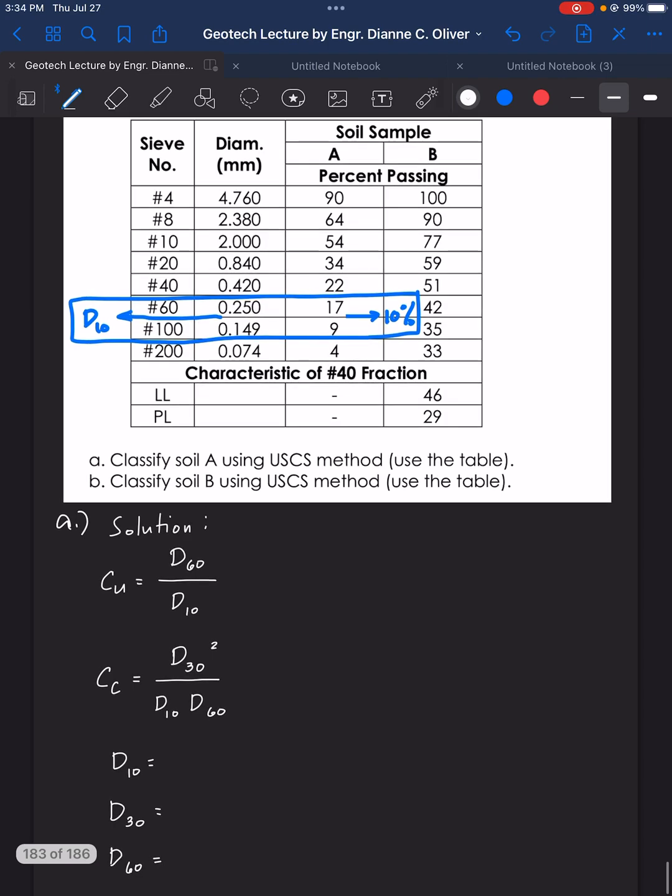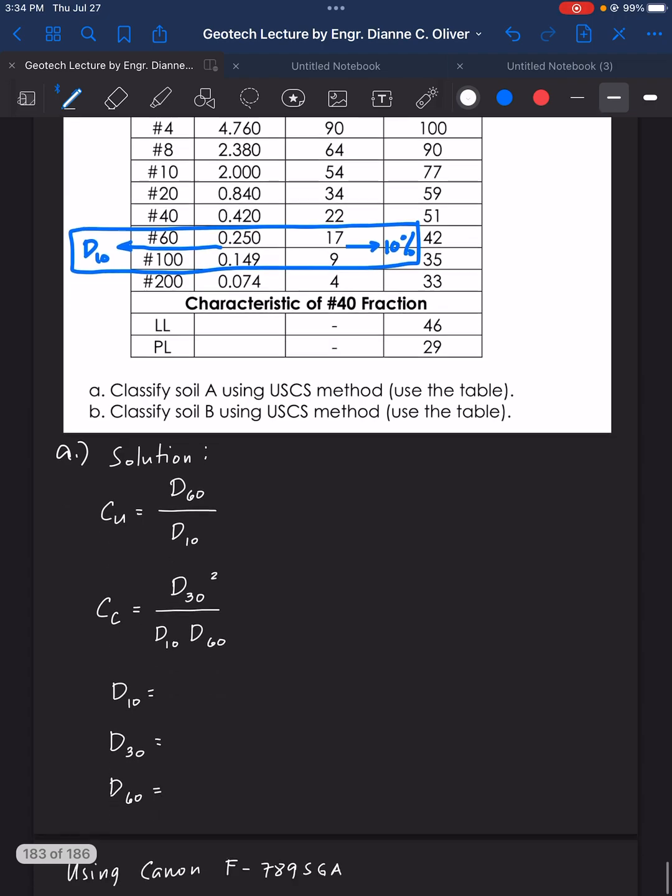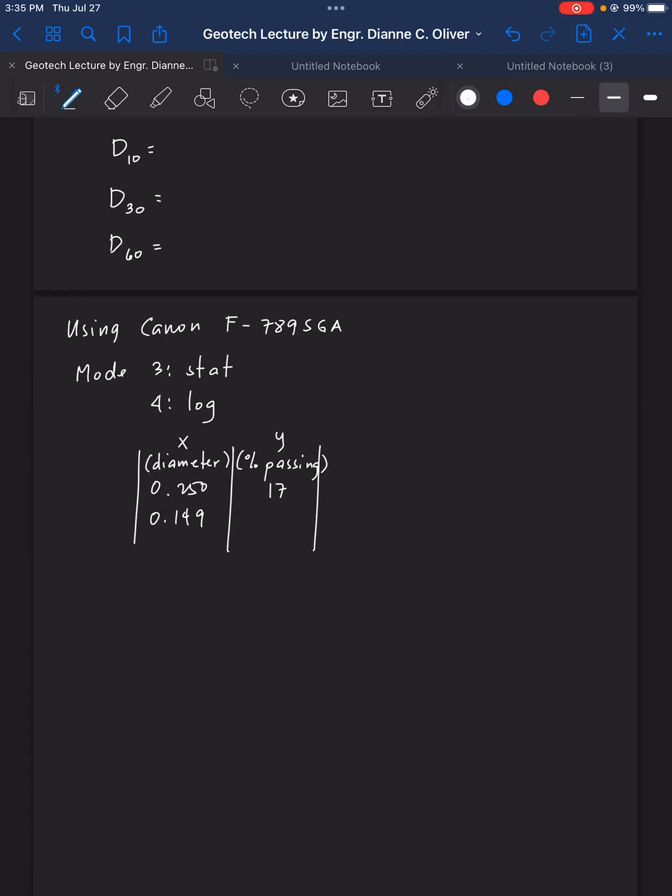Looking here, we will just get here the diameter 0.250 and 0.149. We will write here, input 0.250, so 0.25, equals 0.149. So 0.149, equals. And then, the next column, you write there, the 17 and 9, the 17 percent, the 17 there, equal, 9, equals. Just click there, equal keypad, then click there, is CA.